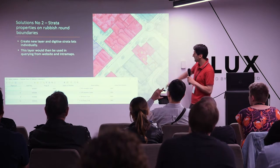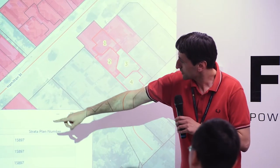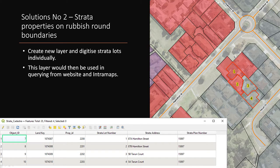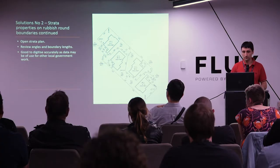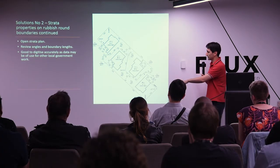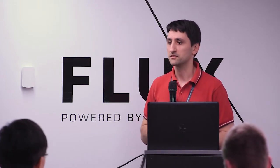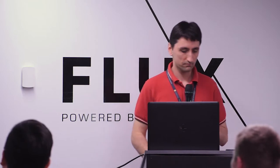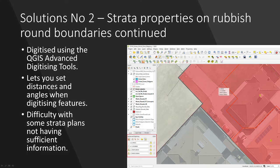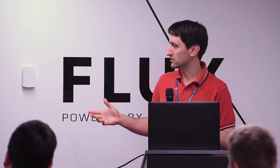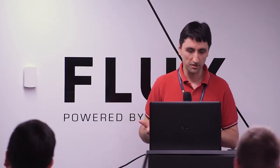To fix the strata boundary issues, we created a new layer to digitize individual strata lots using their strata plan numbers, addresses and so on, then use them to query which properties fall into which rubbish round for our website and mapping system. You get the strata plan — it has lengths and angles — and try to digitize as accurately as you can using the QGIS advanced digitizing tools, which let you digitize with angles and distances. Some plans didn't have all the lengths and angles needed, which was fun.